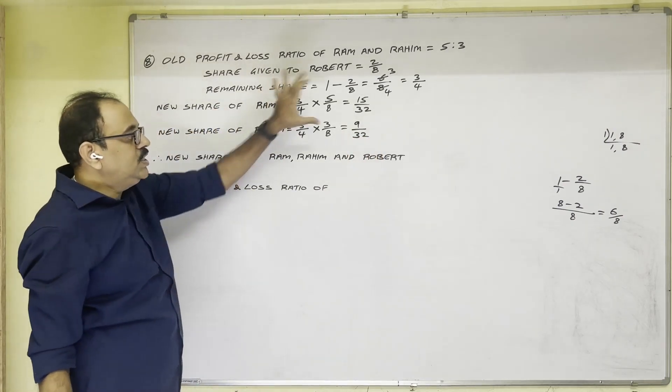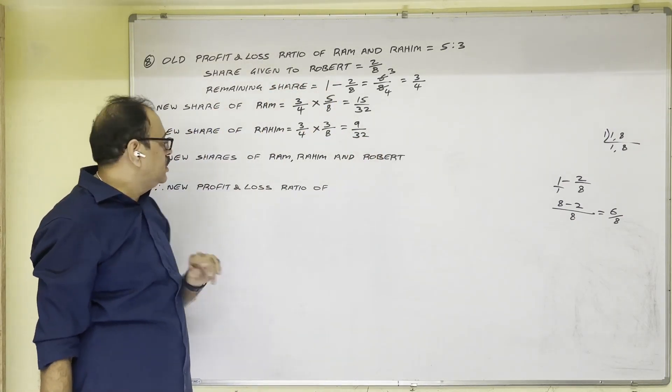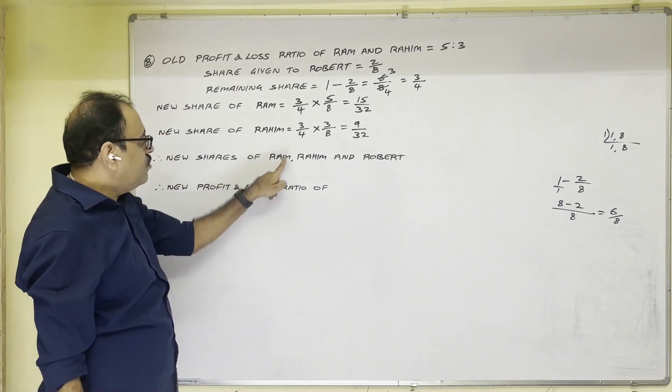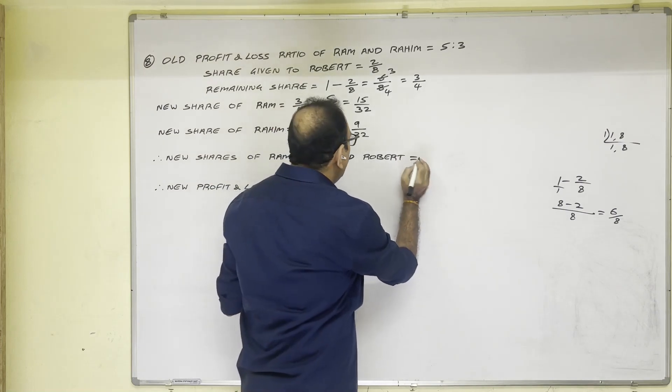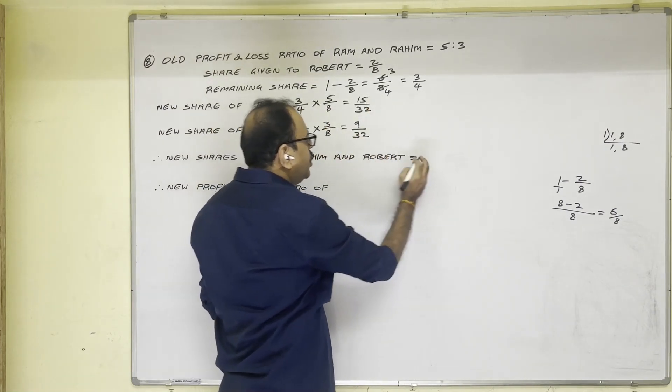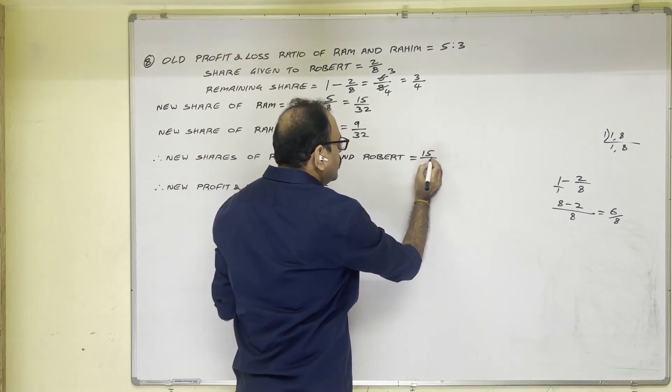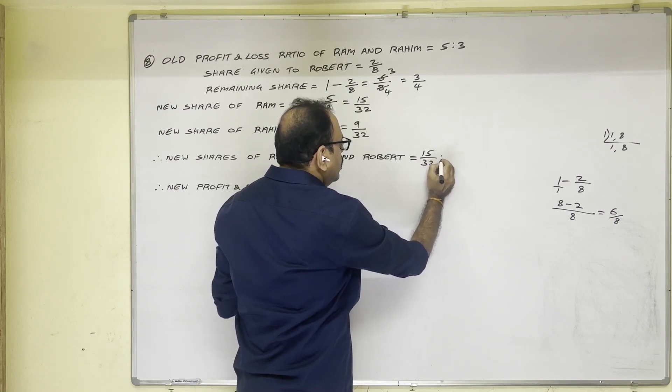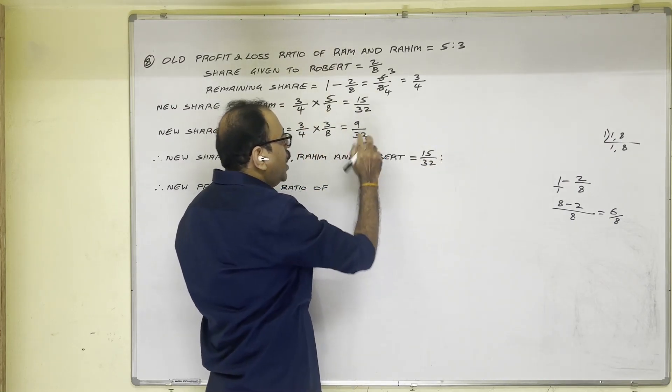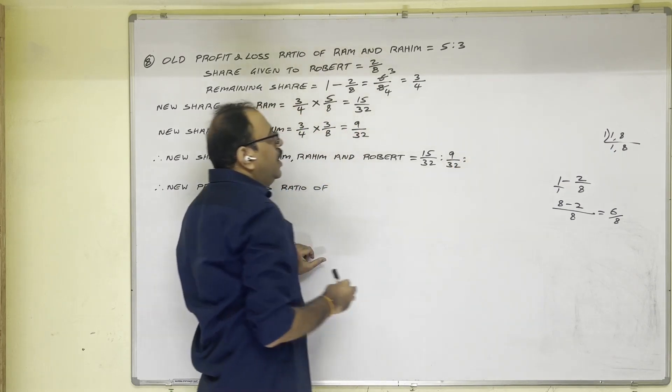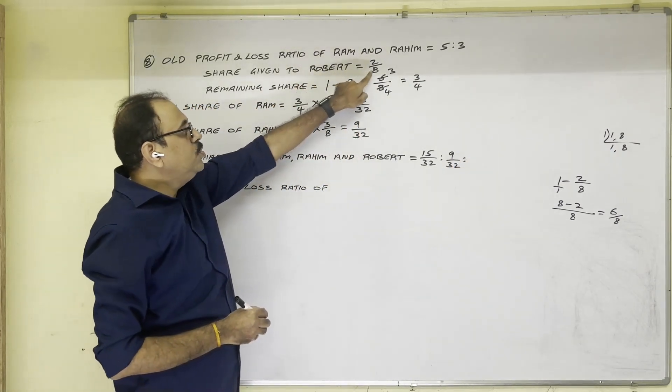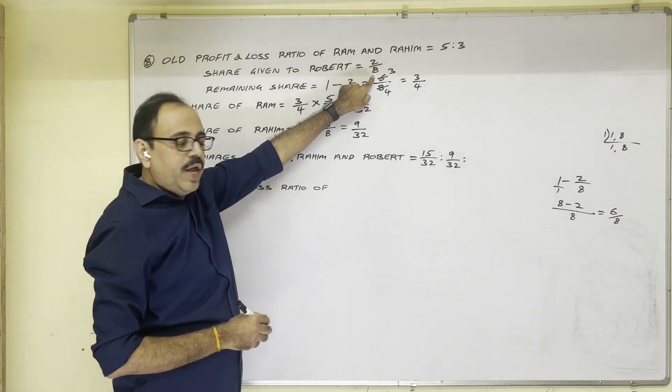So 3 shares we got now. Now write them in one place. New shares of Ram, Rahim and Robert. Ram new share 15/32. Rahim new share 9/32. And Robert's new share is given in the question, 2/8.